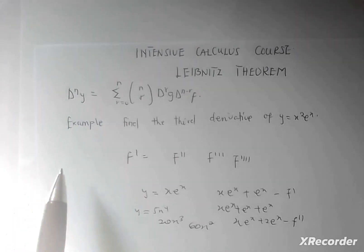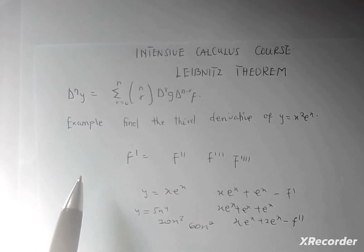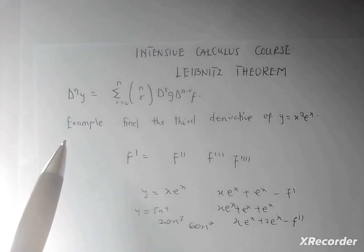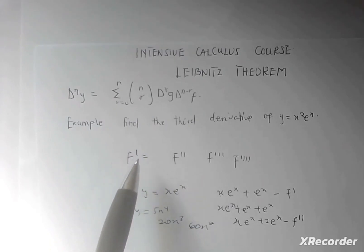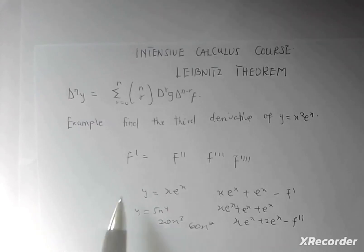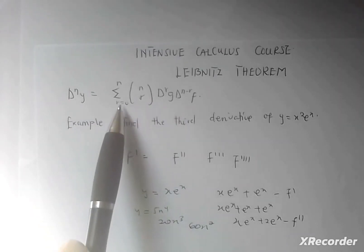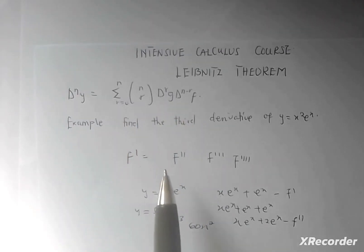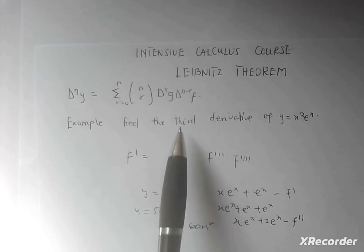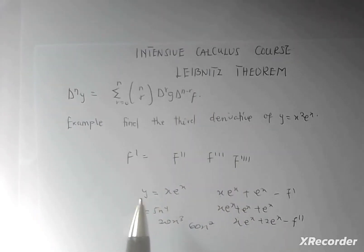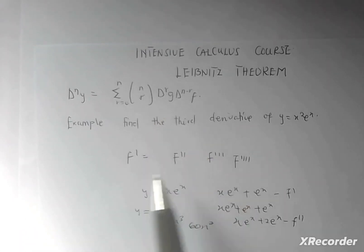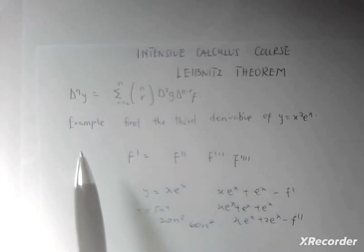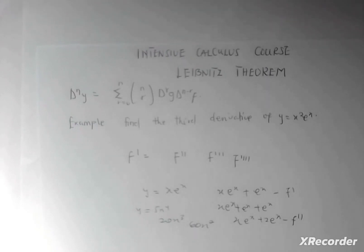The Leibniz theorem states that d^n of the function, where n is the number of times you have been asked to differentiate, is equal to the summation from r equals 0 to n. This applies the binomial expansion from elective mathematics. We have the r-th derivative of the first function g, multiplied by the (n minus r)-th derivative of the second function, meaning you differentiate the first and second functions separately, then put them into this formula.